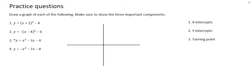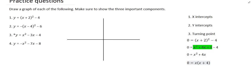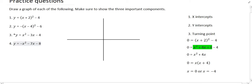We'll start with number one. To find the x-intercepts you have to make y equal to zero. We would then multiply the two brackets out and simplify all the like terms. You could then solve the resulting equation by either using the quadratic formula or by factorizing. Using factorizing, we can take out a common factor of x, giving us x equals zero or minus four. We can now locate those on the diagram.